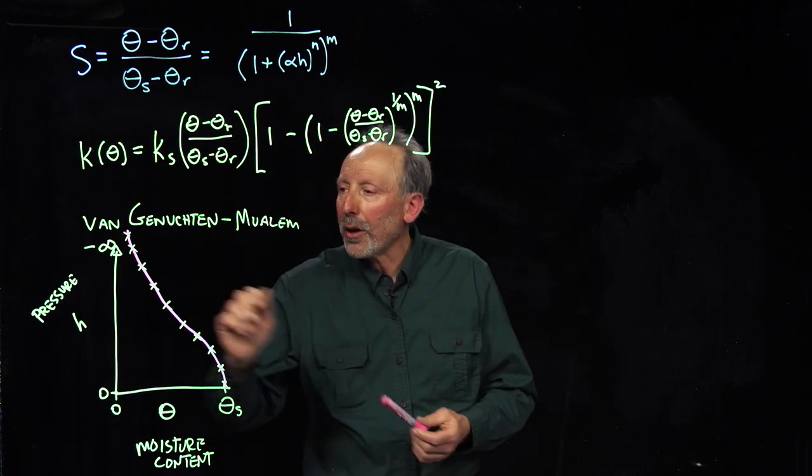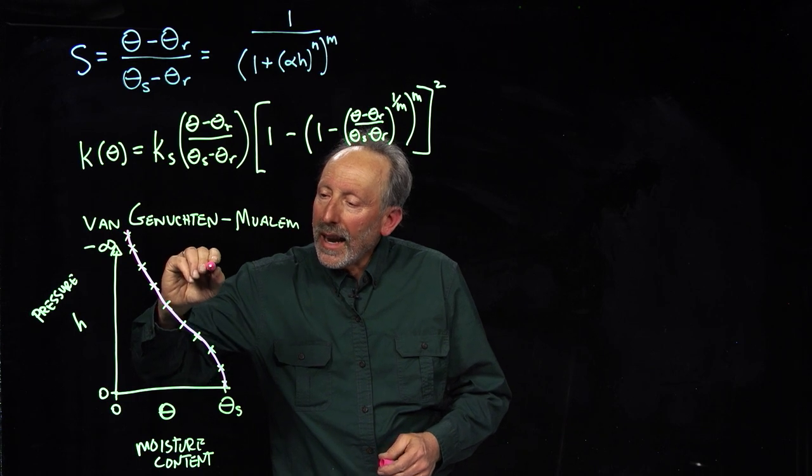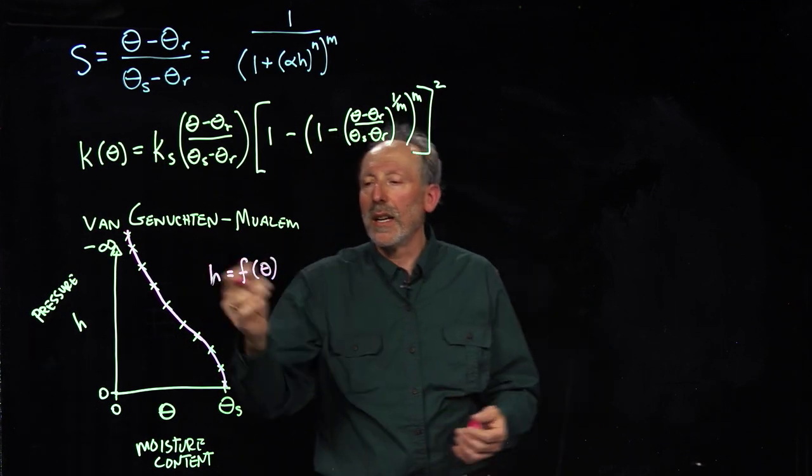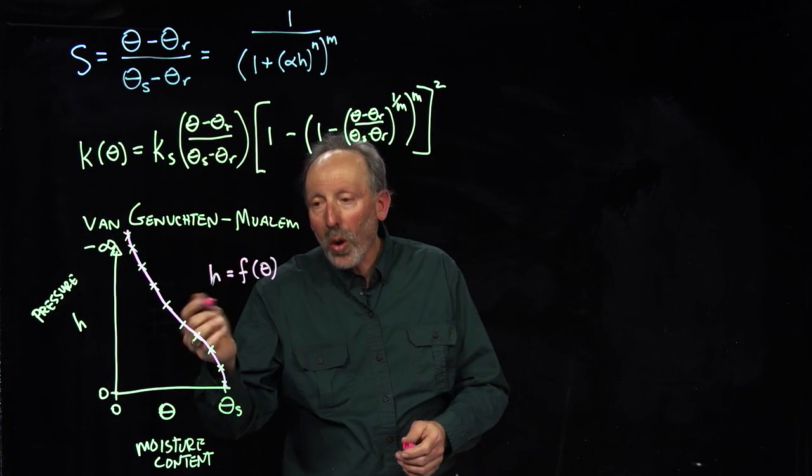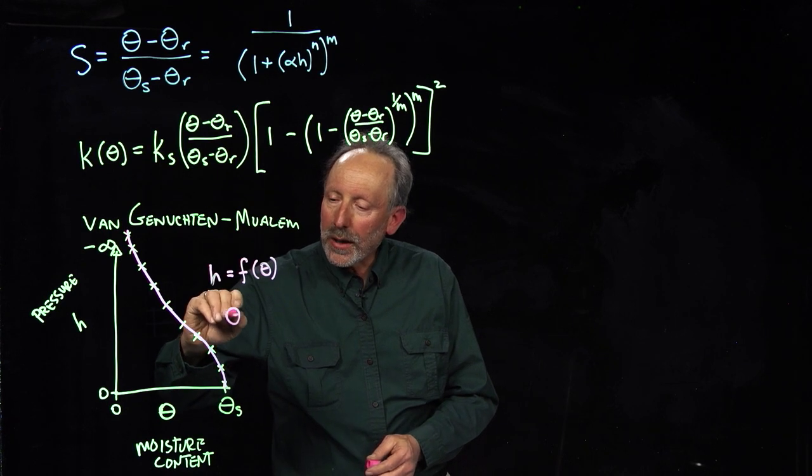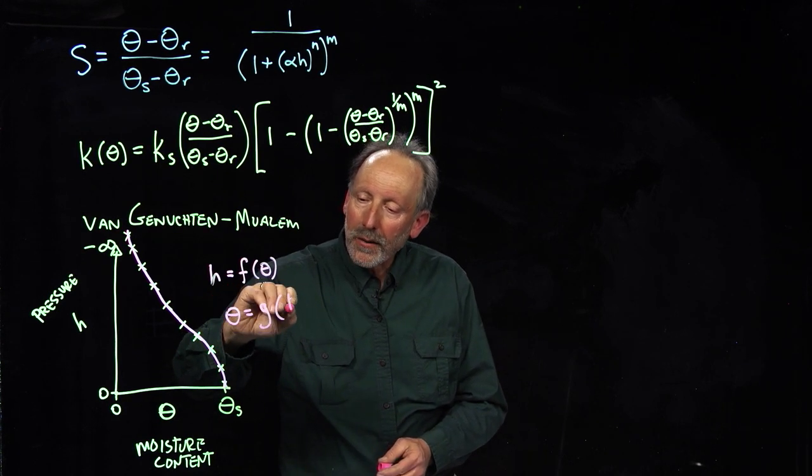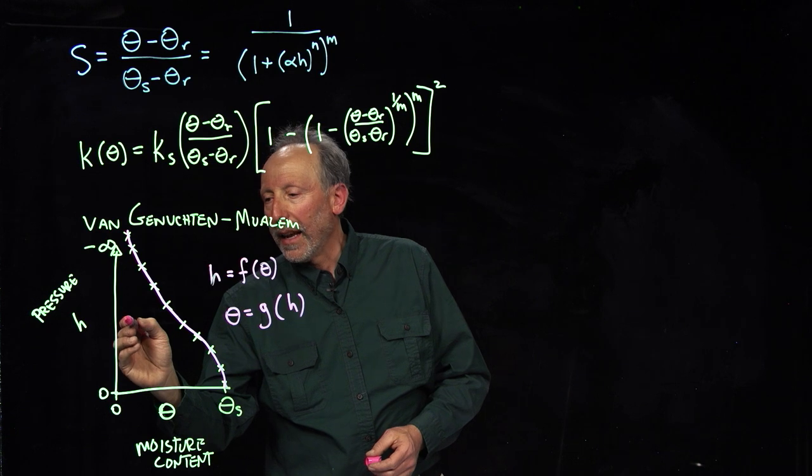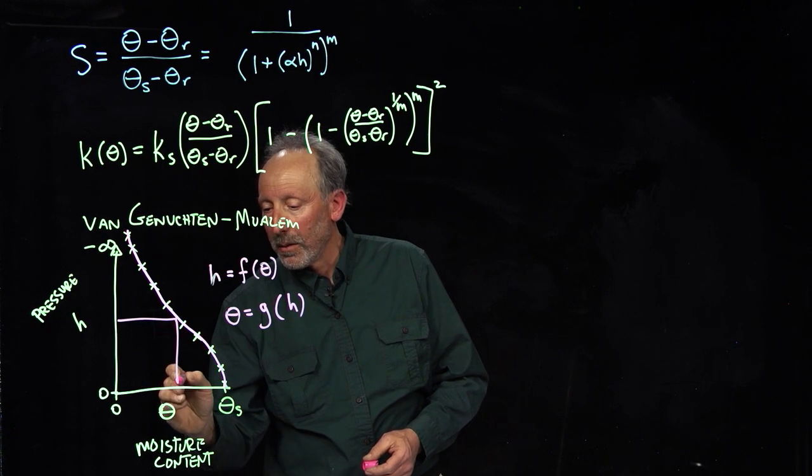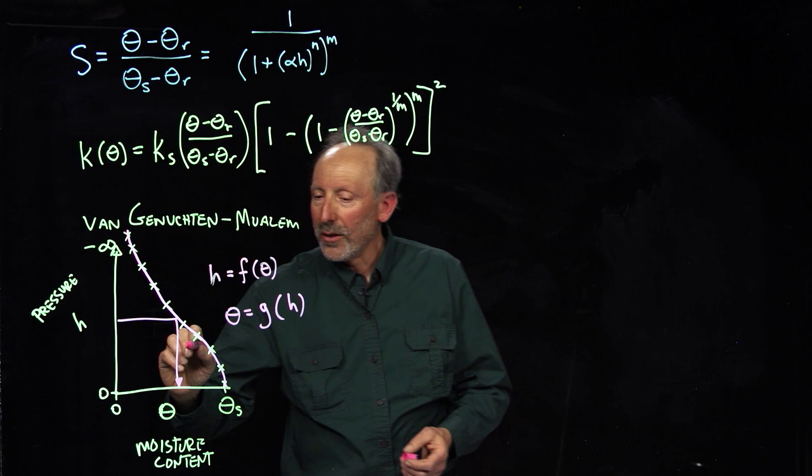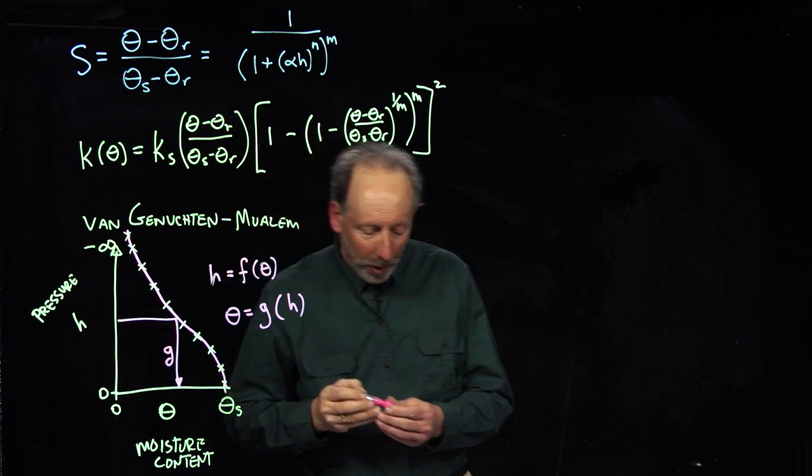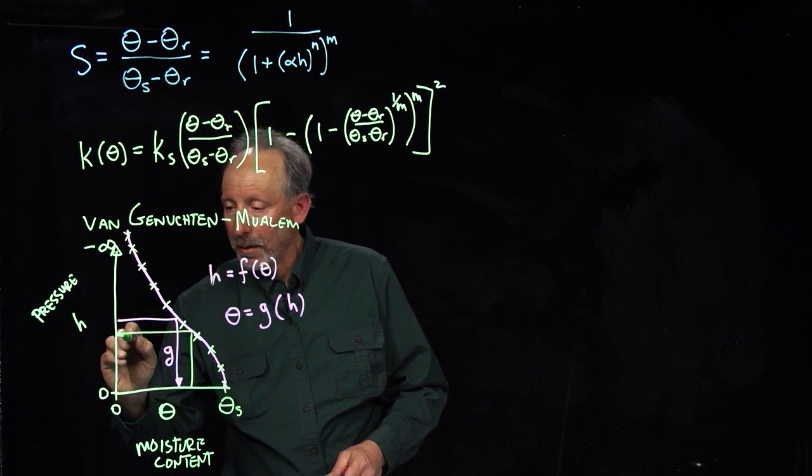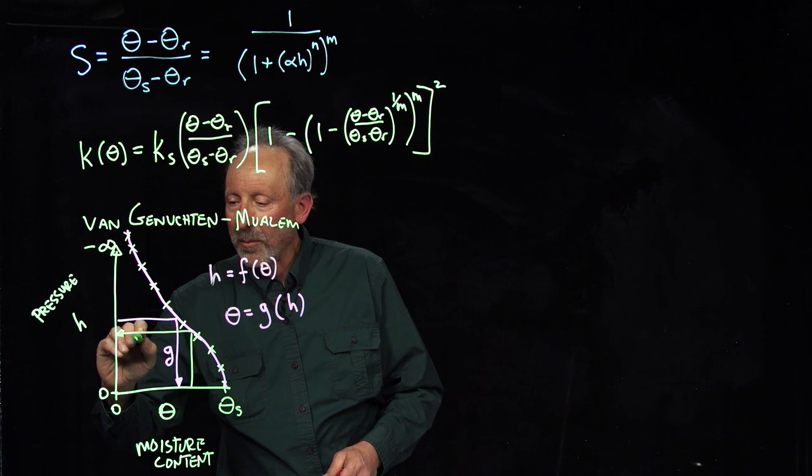So this curve, if we had something which said that H is a function of moisture content, you give me a moisture content, I give you a pressure. Or you could say that moisture content is some function of head. You give me a head, I'll give you moisture content. And that's really all this is. I can go from head to moisture content, or, and that would be G. Or I can go from moisture content to head, and that would be F.